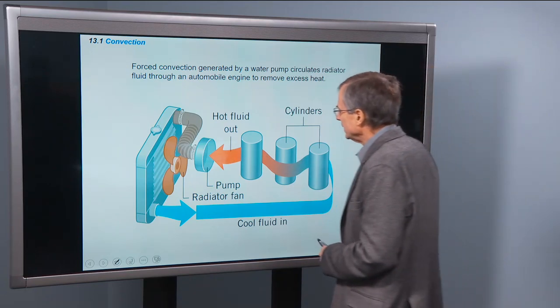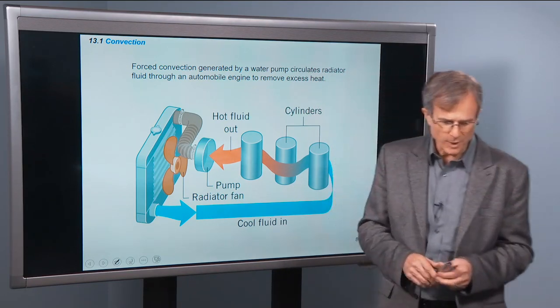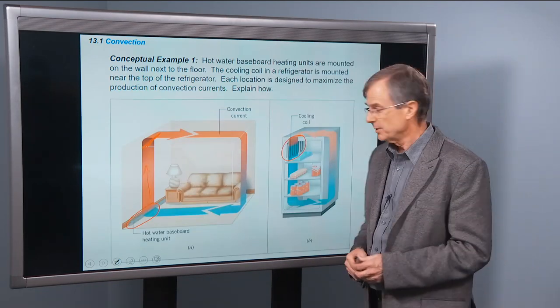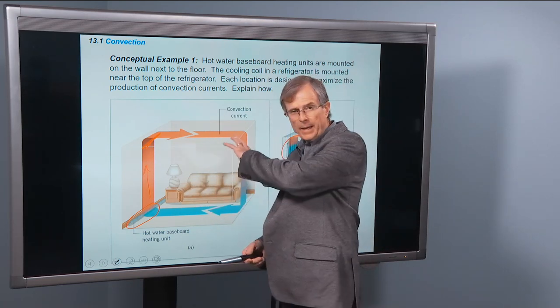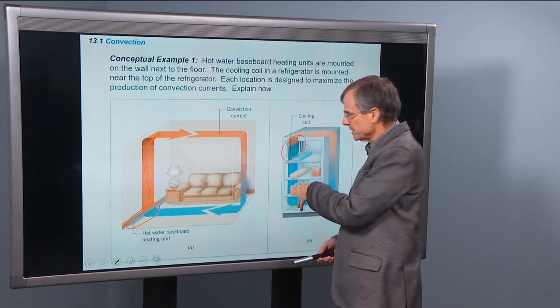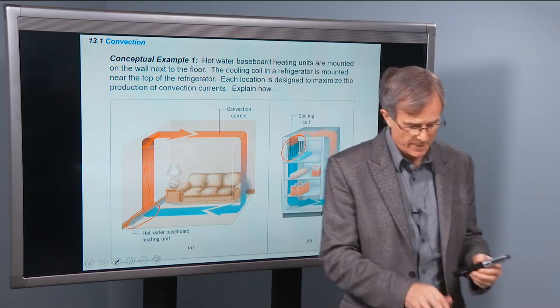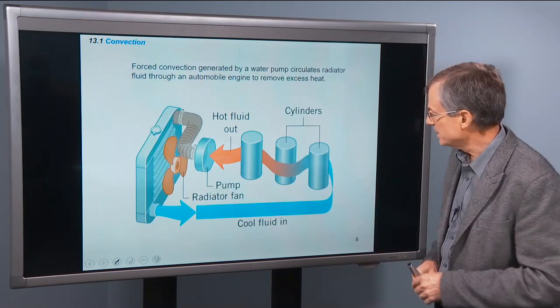Forced convection. So the examples that we've talked about so far, these are called natural convection, where there's no fan that's needed to circulate this warm air in this case, cold air in this case. It just occurs naturally by the natural expansion or contraction of the air. Forced convection is a different beast.